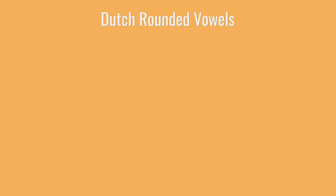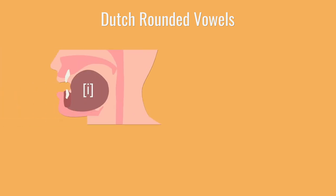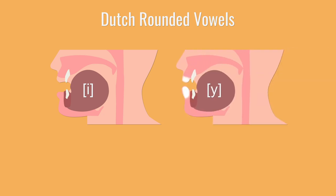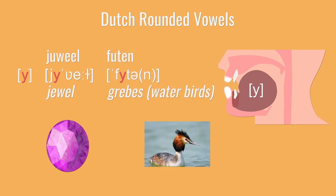Now I'd like to introduce you to a bunch of so-called rounded vowels. Dutch makes a few vowels by taking a tongue position you already know. Say E with your tongue all the way up and in the front — E — and then round your lips without moving your tongue. So if you take E as in eat and round your lips without moving your tongue, it should stay near the front as high as it can go.